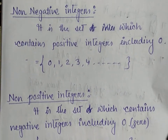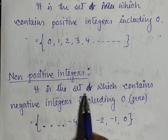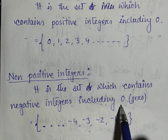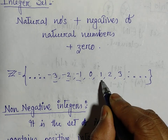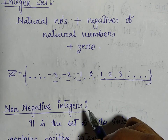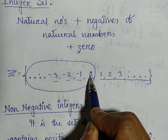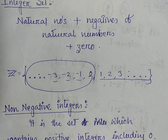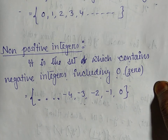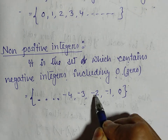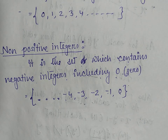What about the set of non-positive integers? Non-positive integers means the set which contains negative integers including 0. We are not supposed to consider positive integers, so from the set of integers we exclude the positive integers. The remaining elements — from 0 to minus infinity — are known as non-positive integers. That means 0, minus 1, minus 2, minus 3, minus 4, up to minus infinity.